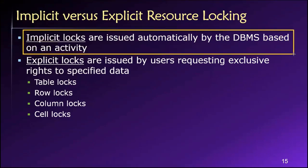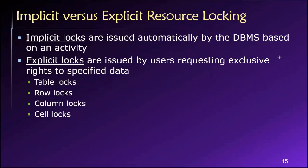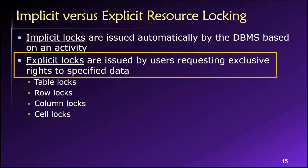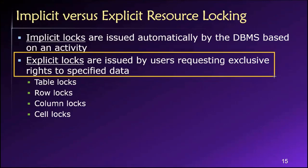We don't have to do anything individually as users in our transactions — we don't have to request exclusive access to system data. They're issued automatically by the database while the transaction is still alive. Explicit locks are our other type of lock, and these are requested intentionally by users. I might have a transaction where, as part of that transaction, I request to lock some resources in the database.